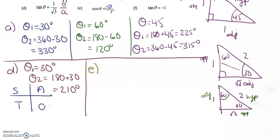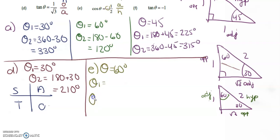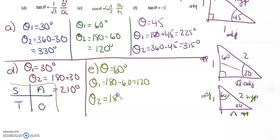For E — cos θ equals negative 1 half. We're looking for adjacent 1 and hypotenuse 2, which gives us the related acute angle of 60 degrees. But because cos is negative, our θ₁ and θ₂ won't include that related acute angle directly. Using the CAST rule, cos is negative in two quadrants: 180 minus 60 gives 120 degrees, and 180 plus 60 gives 240 degrees.